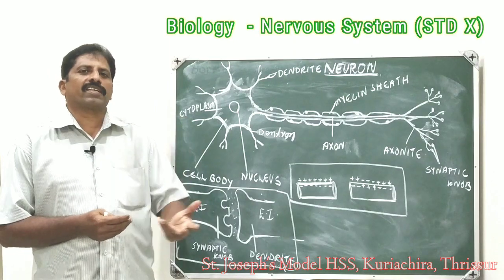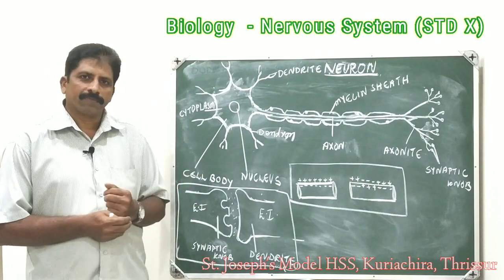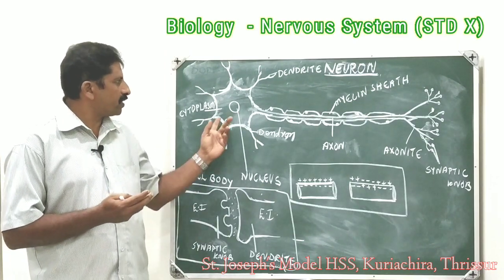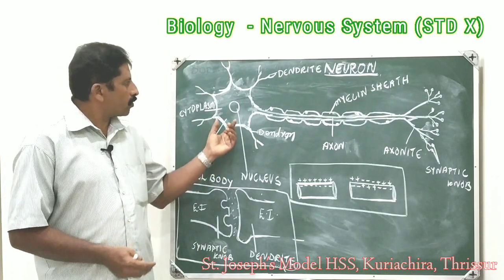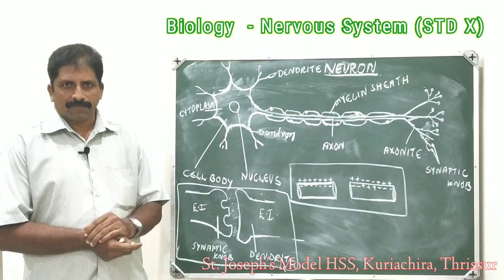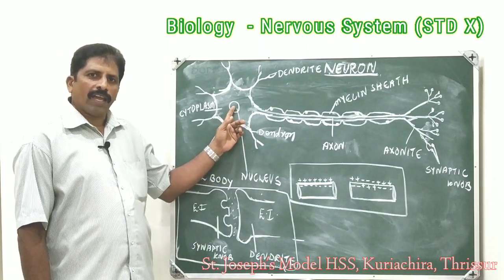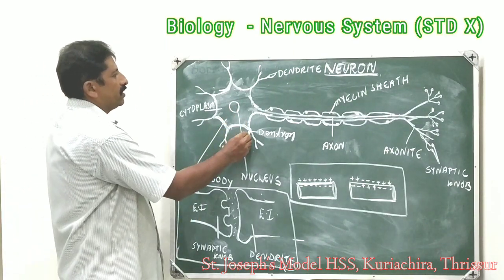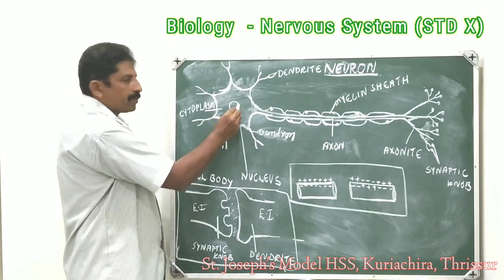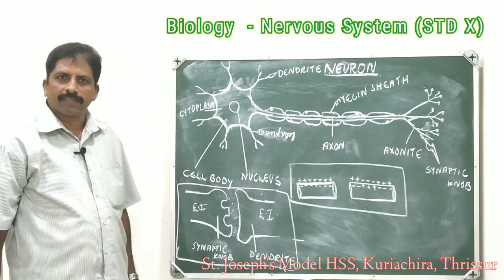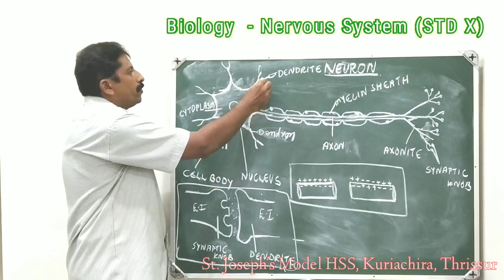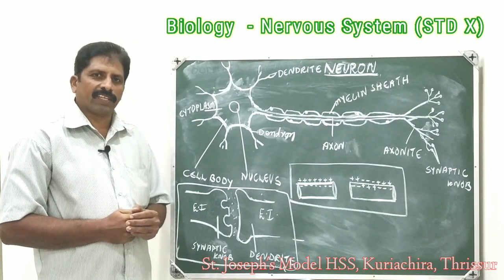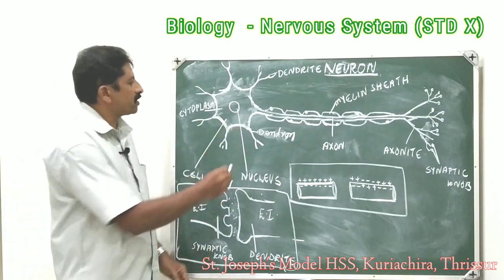But certain other structures are also present in neurons. Now we discuss the different structures of the neuron. The main part of the neuron is the cell body with the nucleus. And numerous branches arise from it. These branches are called dendrons.